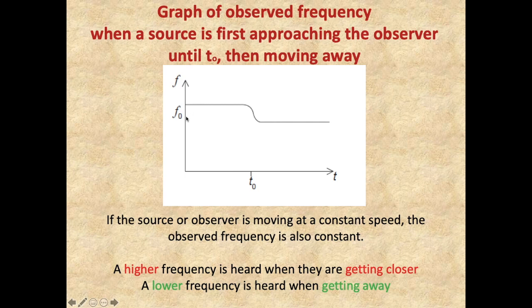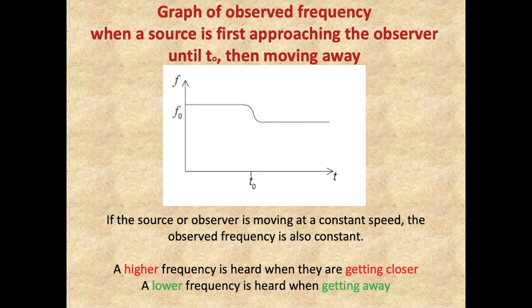This graph shows F₀ — the original emitted frequency by the source. As the source approaches an observer we detect a higher frequency. At the instant it passes by the observer there is a sudden decrease in observed frequency, and as the source moves away a lower frequency is observed. It's important to note that if the source or observer is moving at constant speed, the observed frequency is also constant. A higher frequency is heard when they are getting closer and a lower frequency is heard when they are getting away.